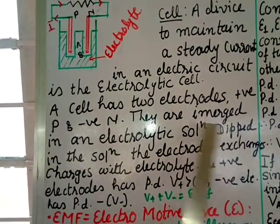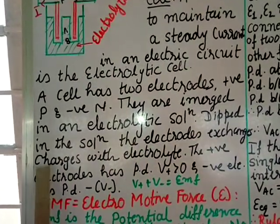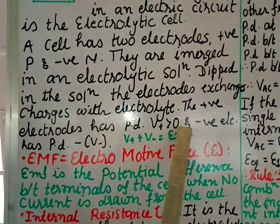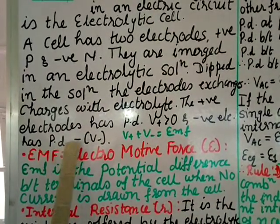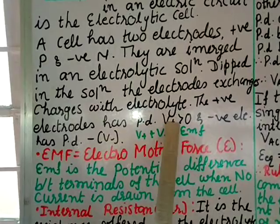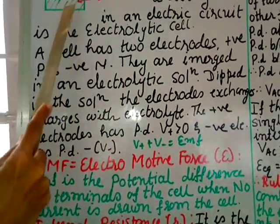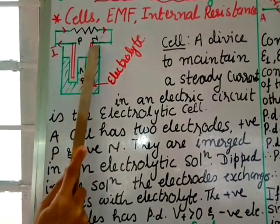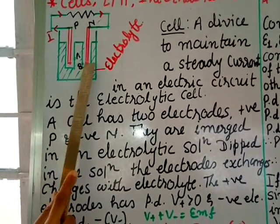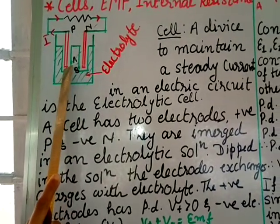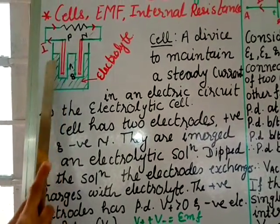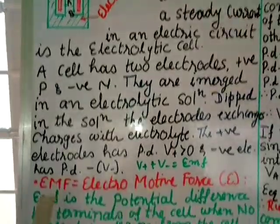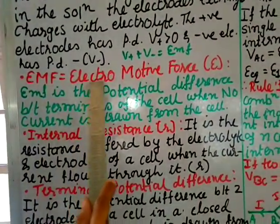In the electrolytic solution, the electrodes exchange charges with the electrolyte. The positive electrode has potential V-plus, greater than zero, and the negative electrode has potential V-minus. The total of these potentials will be equal to EMF. So the maximum potential is at the positive electrode and they are both immersed in the solution, and this total sum equals EMF.